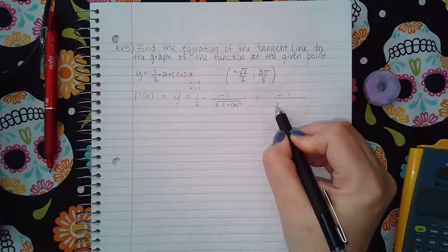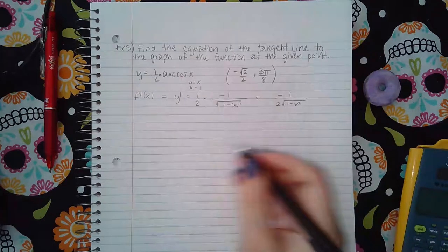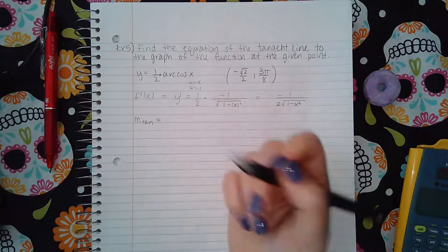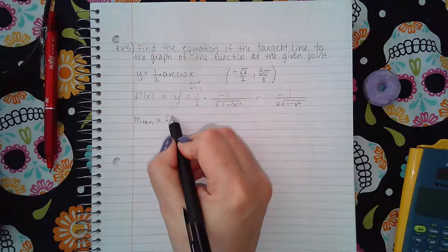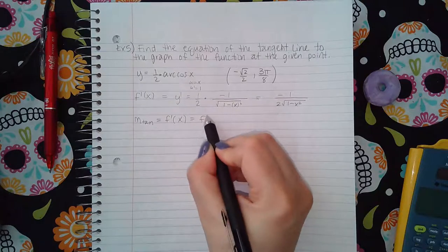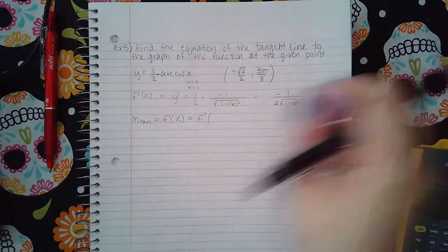If I simplify that, it's just negative one over two square root of one minus x squared. Then if I want to find the slope of the tangent line, we have to plug in the x value that they gave us. So we need to figure out what f prime of x is, f prime of a specific x value.